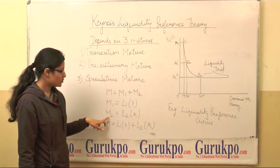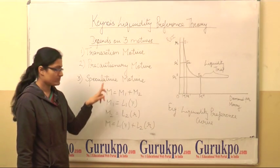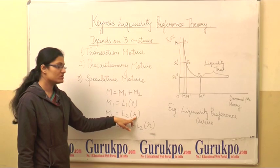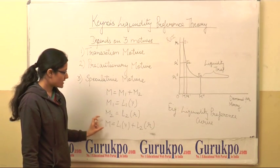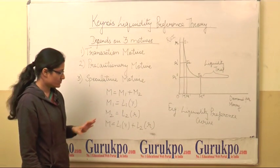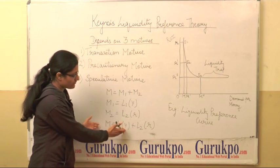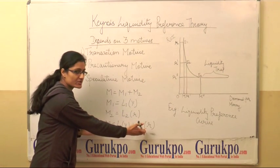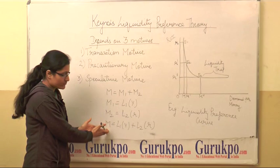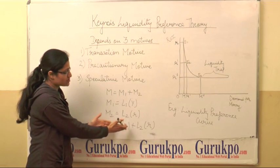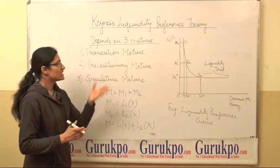Second, M2 is the demand for money under speculative motive. It depends upon rate of interest. So the aggregate demand for money under these three motives depends upon the level of income and rate of interest. The aggregate demand for money is a function of level of income and rate of interest.